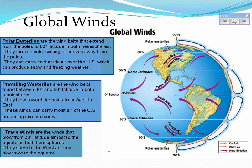The trade winds blow from 30 degrees latitude almost to the equator in both hemispheres. They curve to the east as they blow toward the equator.